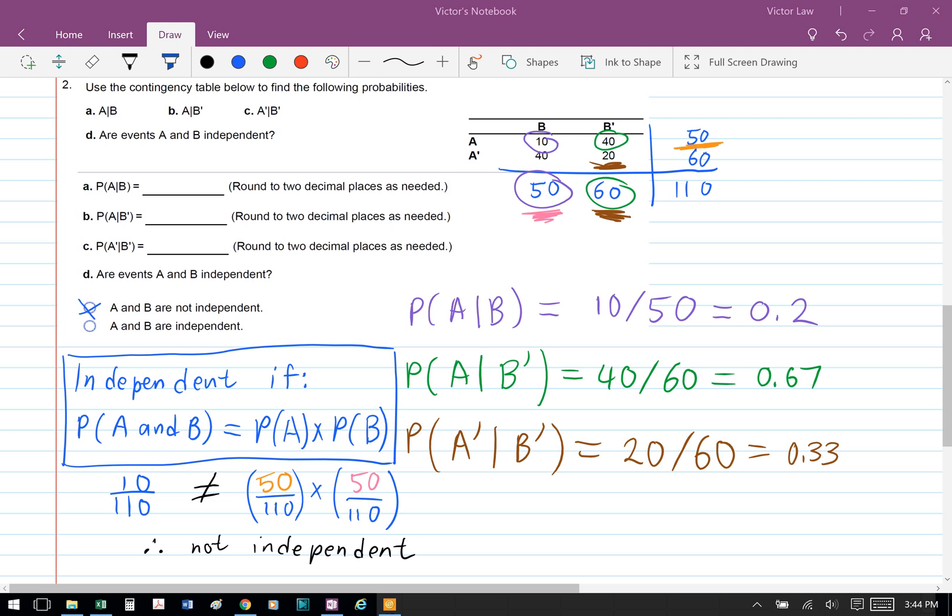The probability of A and B is 10 over 110, while the probability of A is 50 over 110. When we calculate both sides, they're not the same, so therefore A and B are not independent.